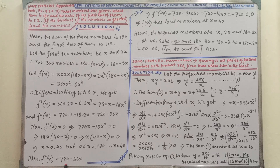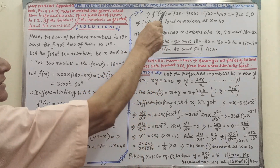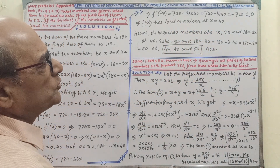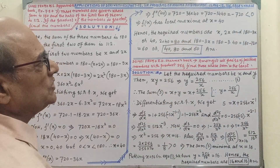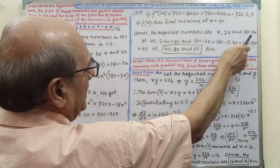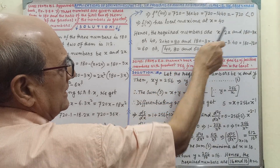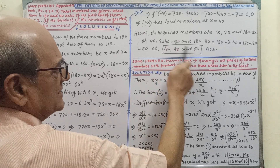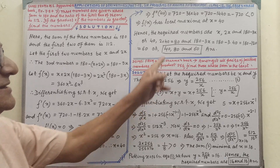Also, f''(x) — in place of x, we put the value 40. After putting 40 in place of x and simplifying, we are getting minus 720, which is less than 0. This implies f(x) has local maxima at x equal to 40. Hence, the required numbers x, 2x, and 180 minus 3x — by putting the value x equal to 40 and simplifying — we are getting 40, 80, and 60. That is the answer.